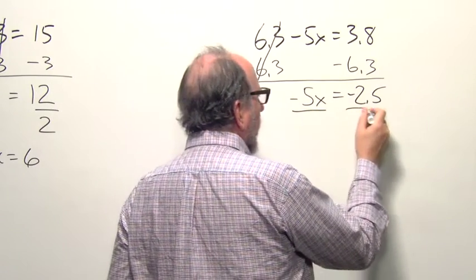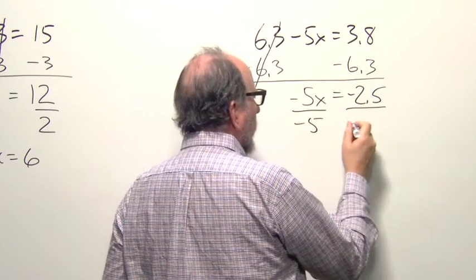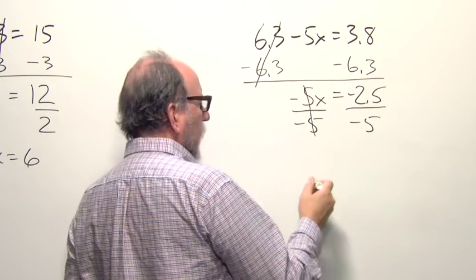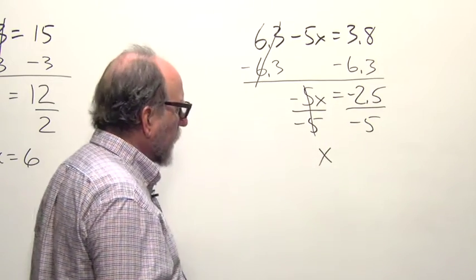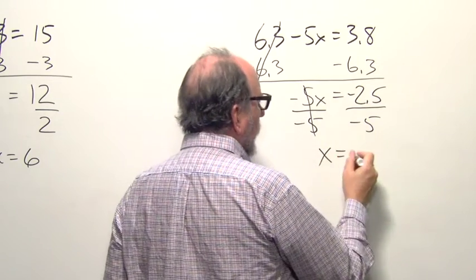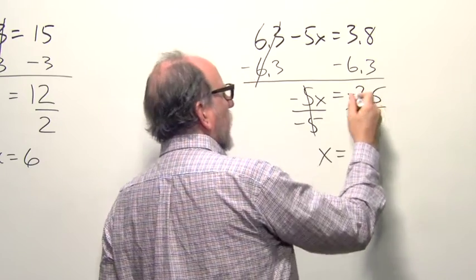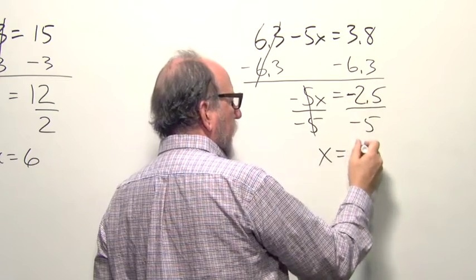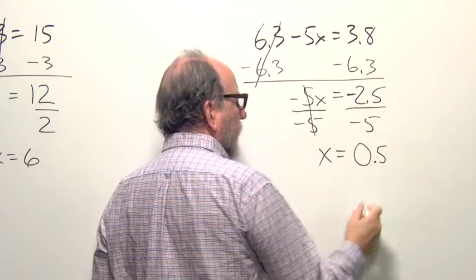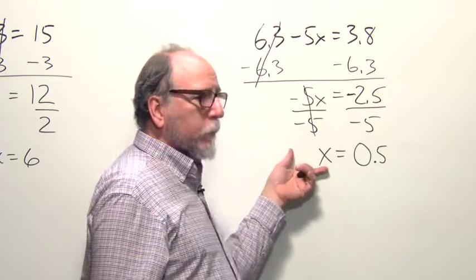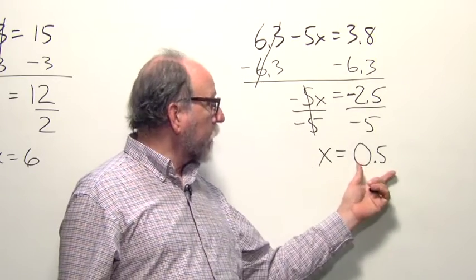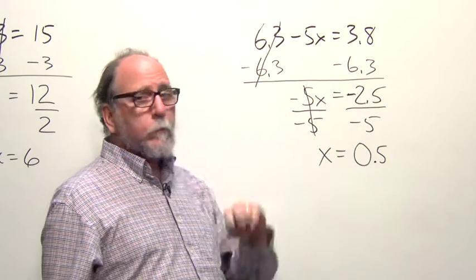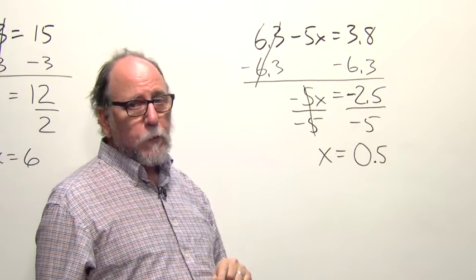And then the final step is to divide both sides by negative 5. On this side, negative 5 divided by negative 5 makes 1. 1 times x is x. And negative 2.5 divided by negative 5 in your calculator, if you want to check that, is positive 0.5—negative divided by negative. And we have the simplest equivalent equation that gives us the answer that x is 0.5. Try that back in here with your calculator to calculate the left side and make sure you get 3.8.